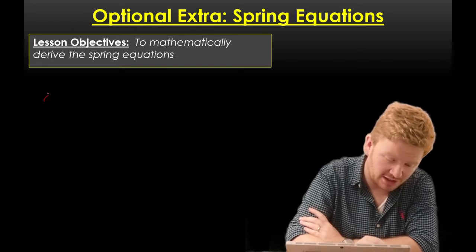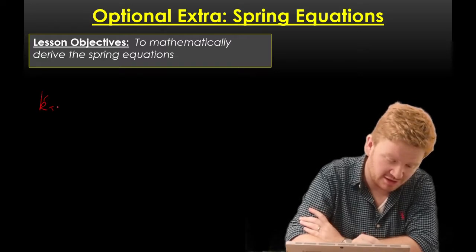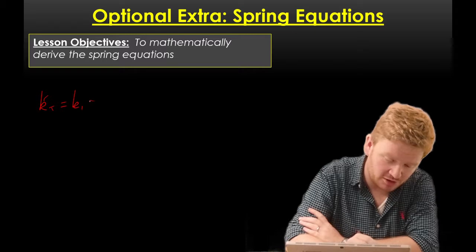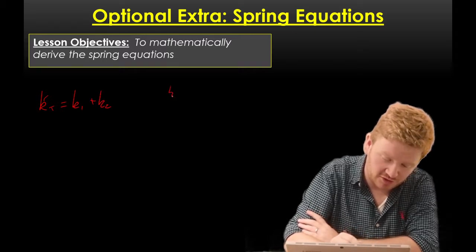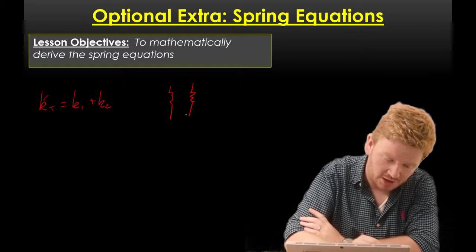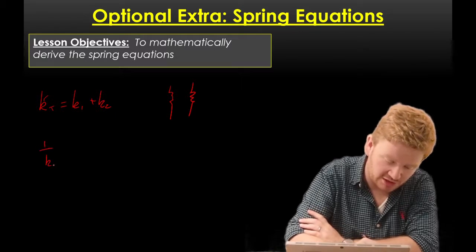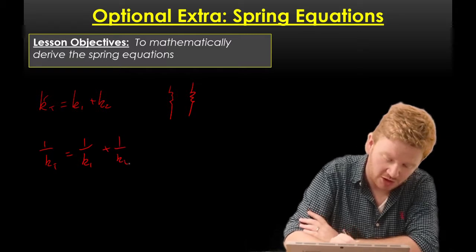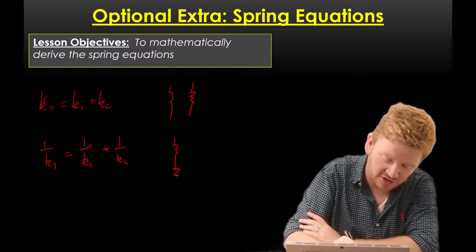So we've got to the point where we have the equation kt is equal to k1 plus k2 for springs in parallel, and 1 over kt is equal to 1 over k1 plus 1 over k2 for springs in series.